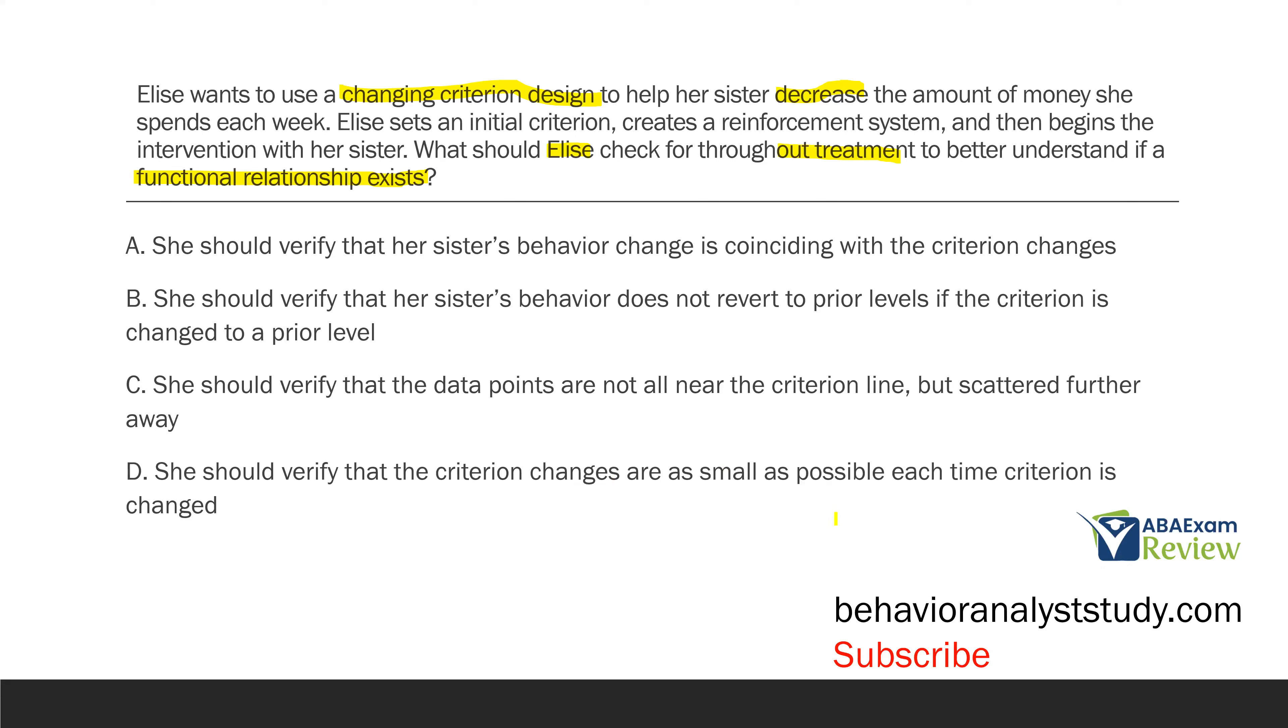D: she should verify that the criterion changes are as small as possible each time criterion is changed. Again, is this true? Well, not necessarily. The larger jump you can make when you change the criterion and if the behavior follows, the more sure you are that a functional relationship exists. So, if I go from 90 to 50, that's a big jump. But if behavior changes from 90 to 50, that's a pretty good indication we're controlling the behavior. This is not the easiest question in the world, but you can see how we broke it down. We went slow when we were able to analyze each answer choice very specifically. And by going slow, we've actually gone quicker than if you try to rush through a question like this. Never rush. Slow is fast, right? Eventually. The slower you go when you're practicing, the faster you'll eventually become. So, our answer here is going to be she should verify that her sister's behavior change is coinciding with the criterion changes.